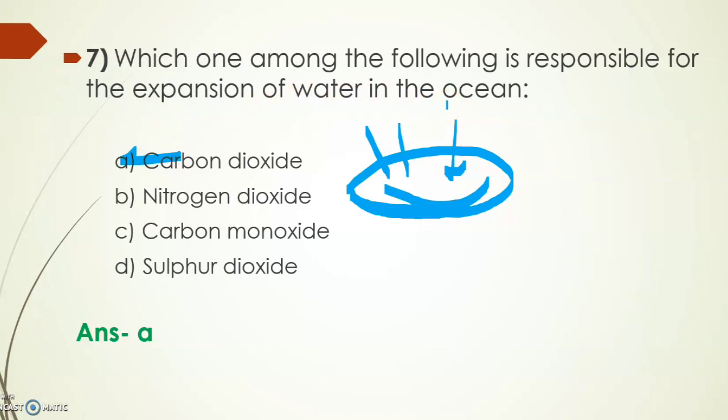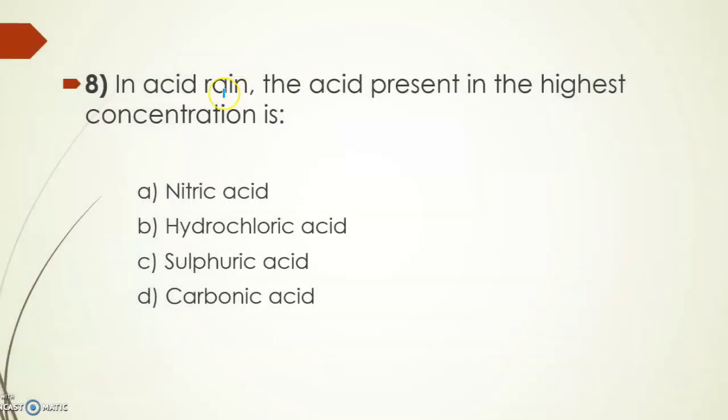Next: in acid rain, the acid present in the highest concentration. Options are nitric acid, hydrochloric acid, sulfuric acid, and carbonic acid. As we can see in these four options, hydrochloric acid cannot be present. Now remain nitric acid, sulfuric acid, and carbonic acid. The highest concentration is sulfuric acid. In acid rain, oxides of nitrogen and sulfur are present, but the highest concentration is of sulfuric acid.